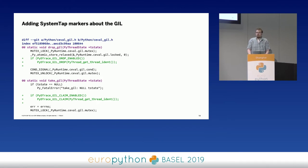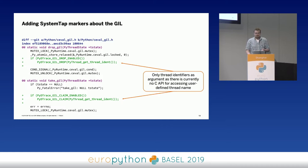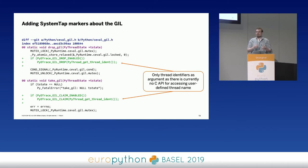You might ask why I don't use thread names — every application should have a nice thread name so you can recognize threads. The problem is, at the moment there is sadly no C API to get thread names without actually holding the GIL, which is a bit complicated if you'd like to measure the time until you actually have the GIL. But I think that's something we can solve at some point.